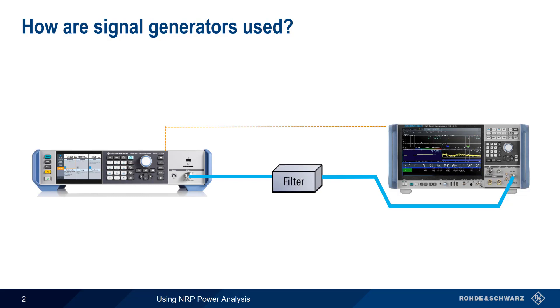For example, if we want to measure a filter, our generator could sweep through a range of frequencies, and our measuring instrument would automatically know the current generator frequency and level.